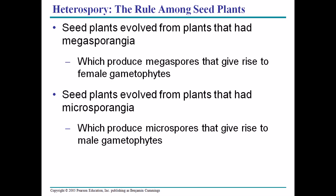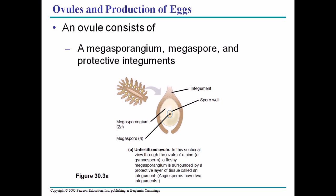Regarding heterospory in seed plants, seed plants evolved from plants that had megasporangia. A sporangium is an organ inside which spores are produced, so a megasporangium is a large structure inside which many spores are produced. The megasporangia produce megaspores that give rise to female gametophytes. The microsporangia, found in male structures, give rise to male gametophytes. Both megasporangia and microsporangia can be found in gymnosperms.